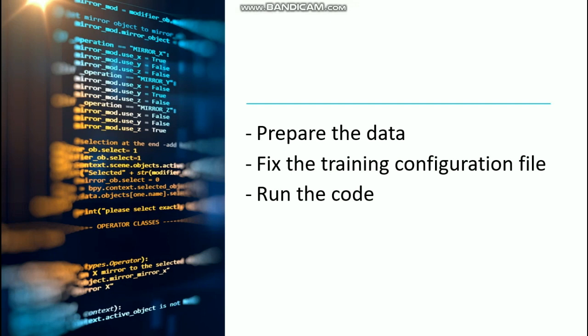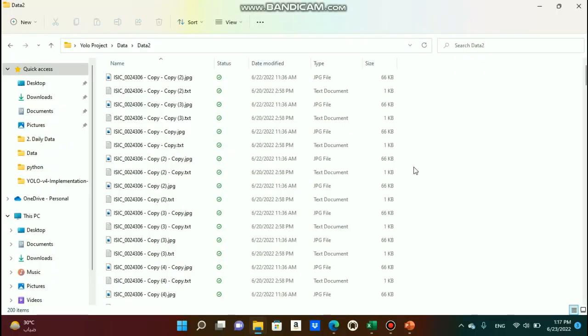The three things we're going to do in order to train our network are: first, prepare the data — this is where you will usually spend most of the time when training a neural network. Then we're going to fix the training configuration file. And then you're going to run a code that's already given to you. Let's go right now and see how exactly our data should look.